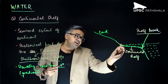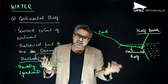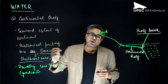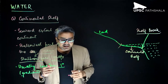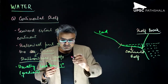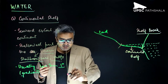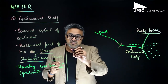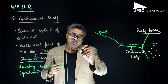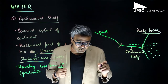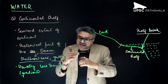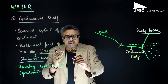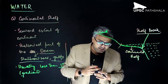How wide the continental shelf can be varies from ocean to ocean. In some places it is as big as 1,500 kilometers, while in some oceans it is practically absent — only a few kilometers in certain places.